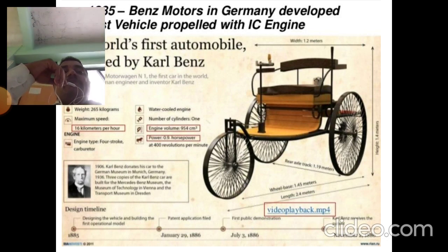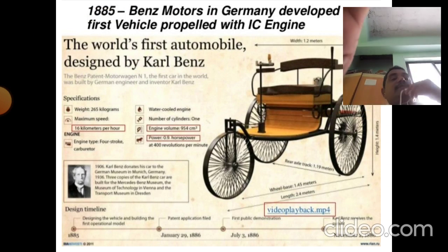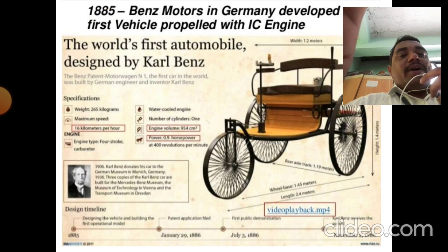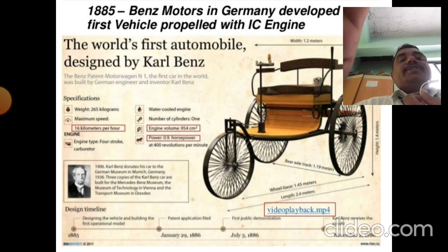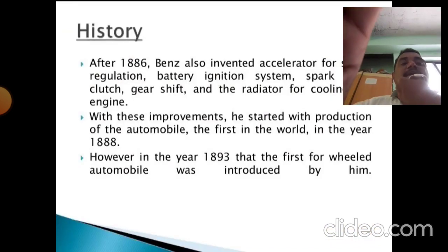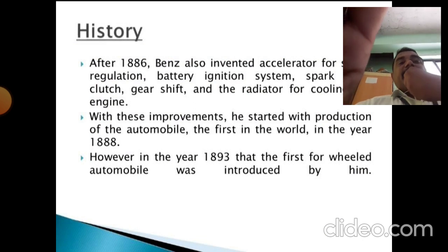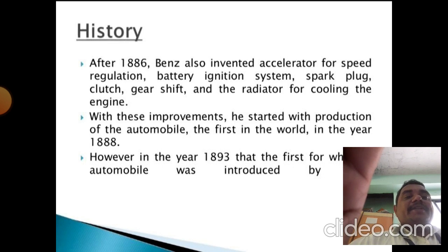Carl Benz produced the world's first passenger automobile. The vehicle weighed 265 kg and had a maximum speed of 16 kilometers per hour. It had a four-stroke engine with a carburetor, water-cooled engine, one cylinder, engine displacement of 954 cubic centimeters, and power output of 0.9 horsepower. After 1885, Benz also invented an accelerator for speed regulation, a battery ignition system, and a spark plug.